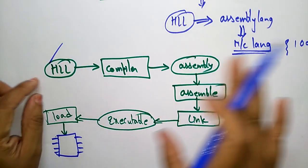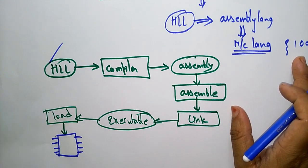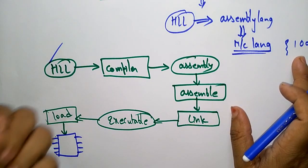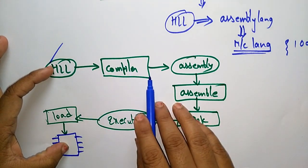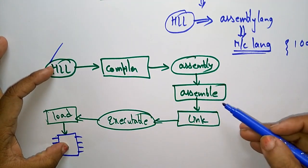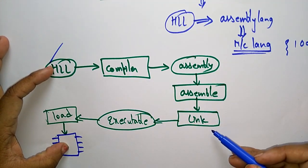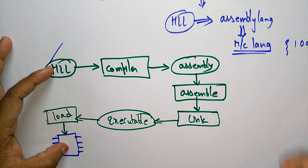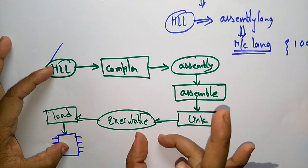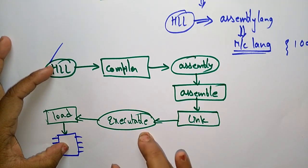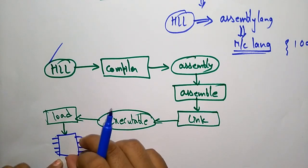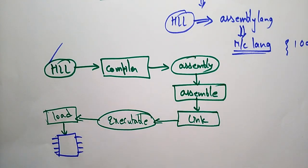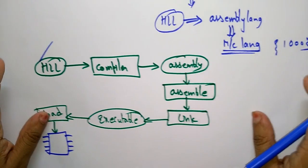So the high level language — whatever software program we want to store in the chip — that software is going to be compiled, after that it is assembled, after that it is going to be linked. That is a .exe file, an executable file. That executable file is going to be loaded on the chip. Once it loads on the chip, then the chip is going to perform the operation.